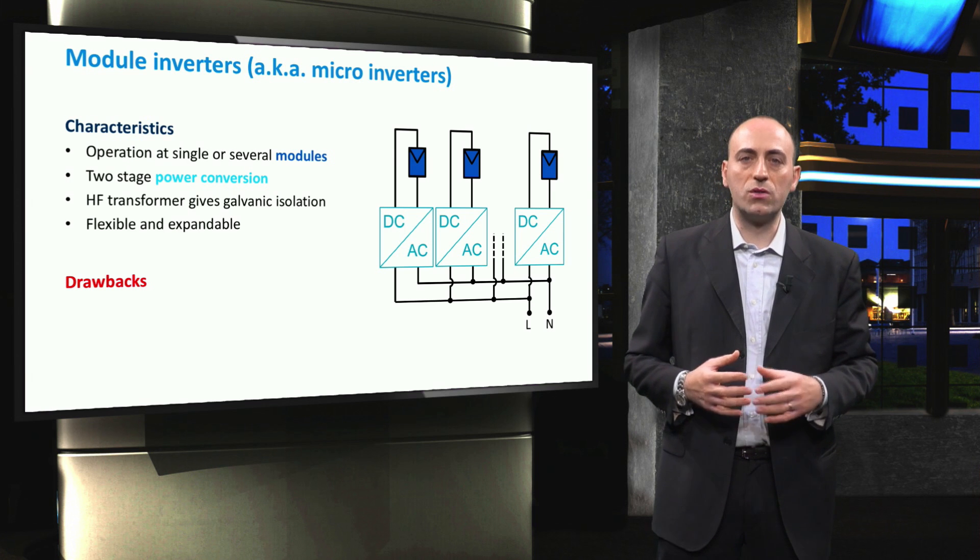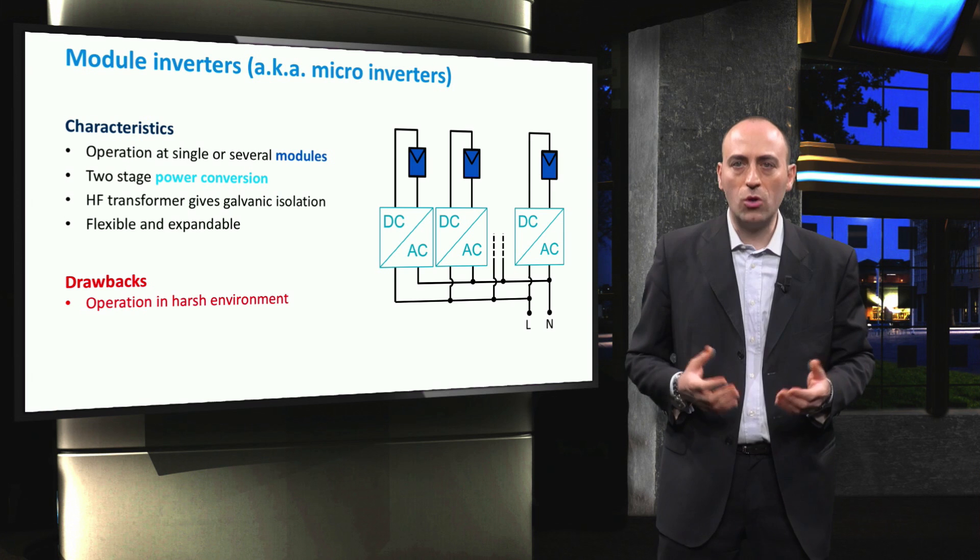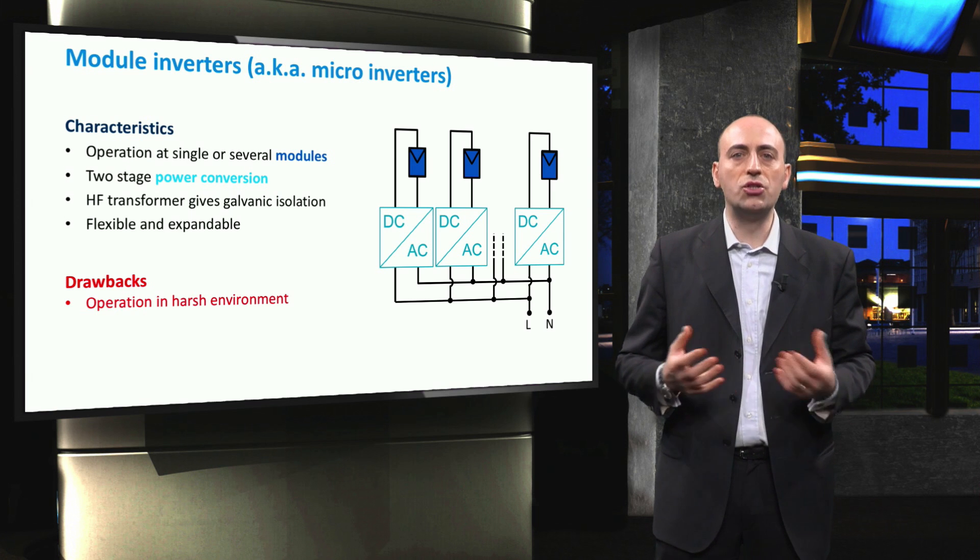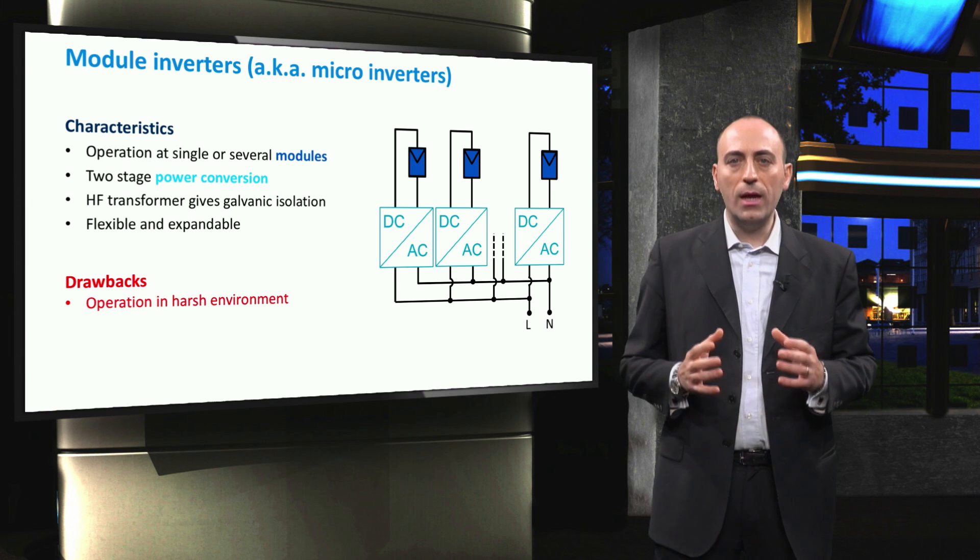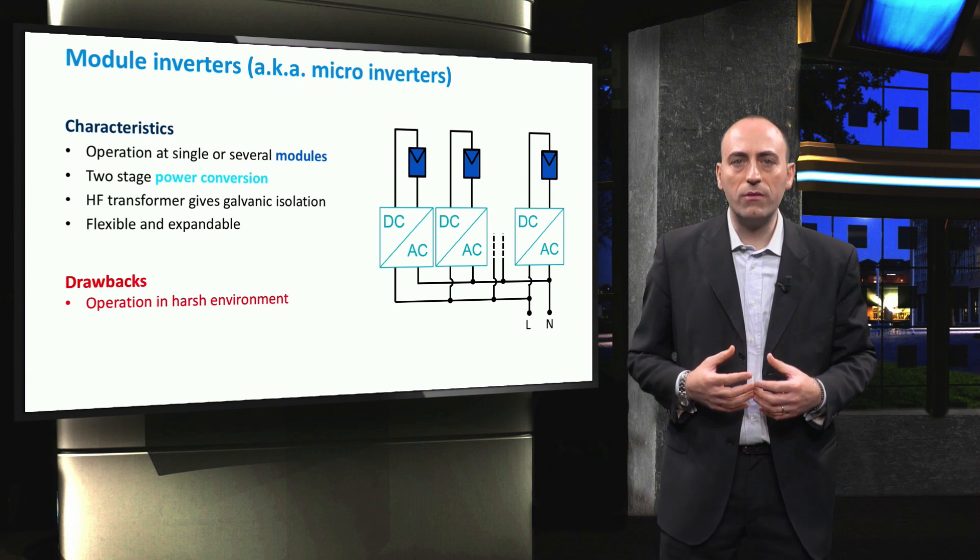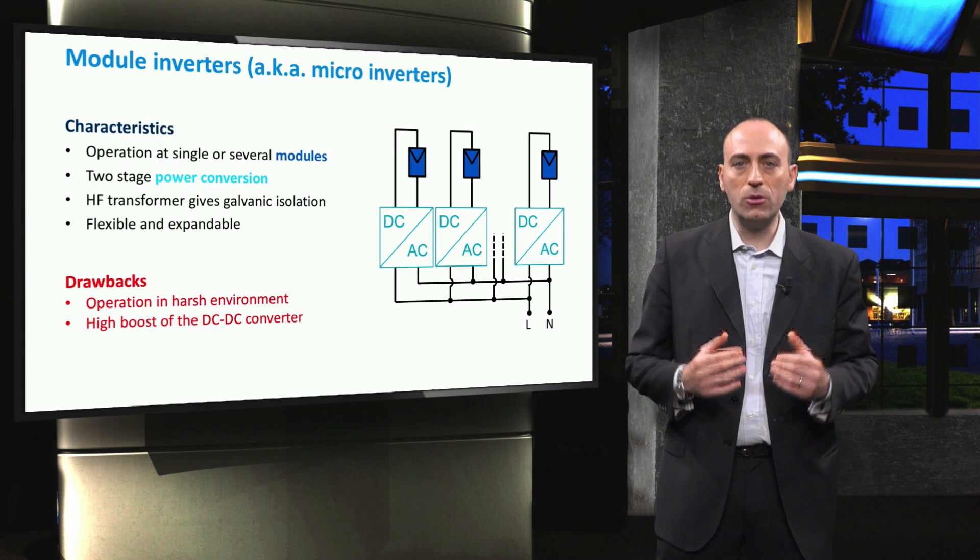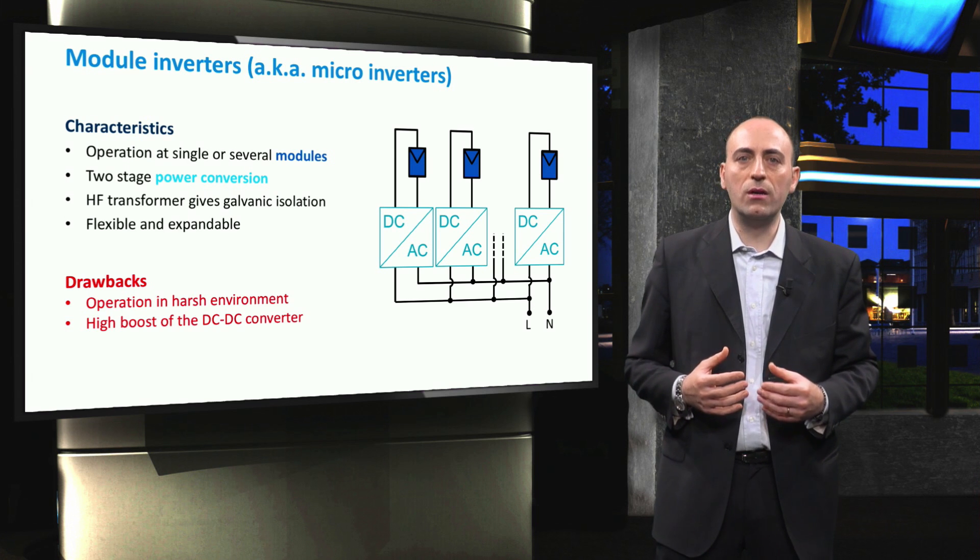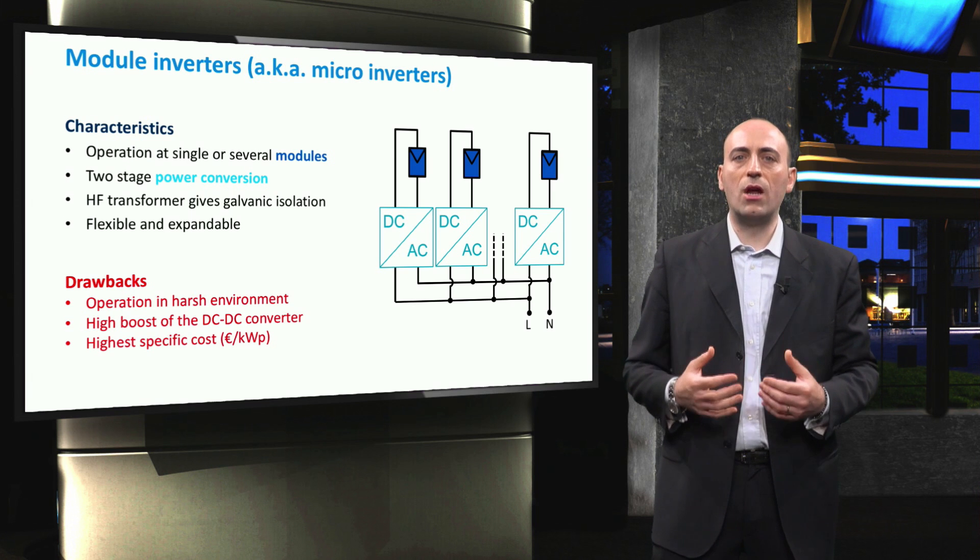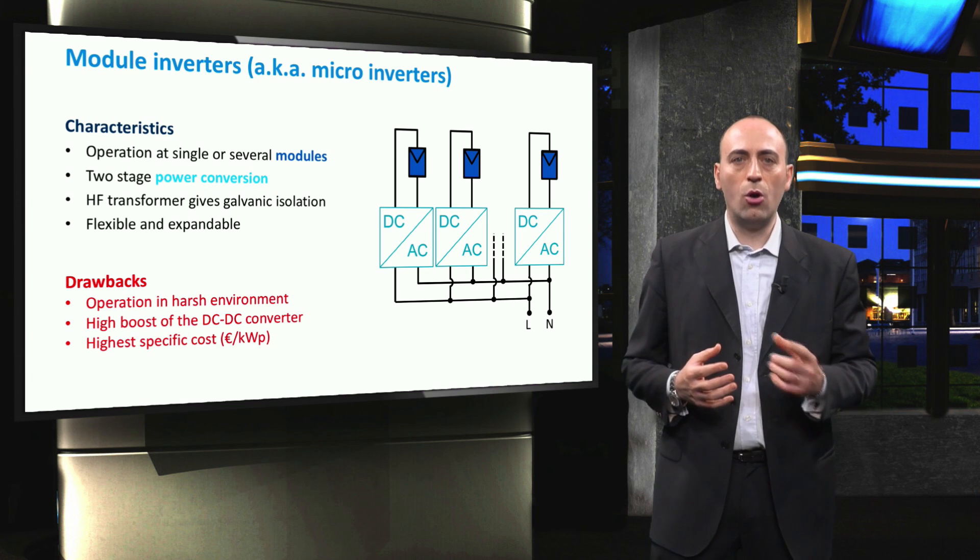Let's now see the drawbacks of such a system, because all these advantages come at a price. Since these inverters are mounted on the backside of a PV module, their embodiment has to be very sturdy in order to operate in harsh conditions, such as high temperature and large daily and seasonal temperature variations. Again, special attention should be put on safety issues related to cabling, to avoid that animals bite the cables, resulting in conduction failures. Another disadvantage is that the PV module voltage is much lower than the output AC voltage. Therefore, the DC-DC conversion has to be considerably boosting the voltage, and this has a detrimental effect on the inverter efficiency. Also, if you have a very large number of modules, then it is no longer economically interesting, because the specific costs are the highest of all the inverter topologies.